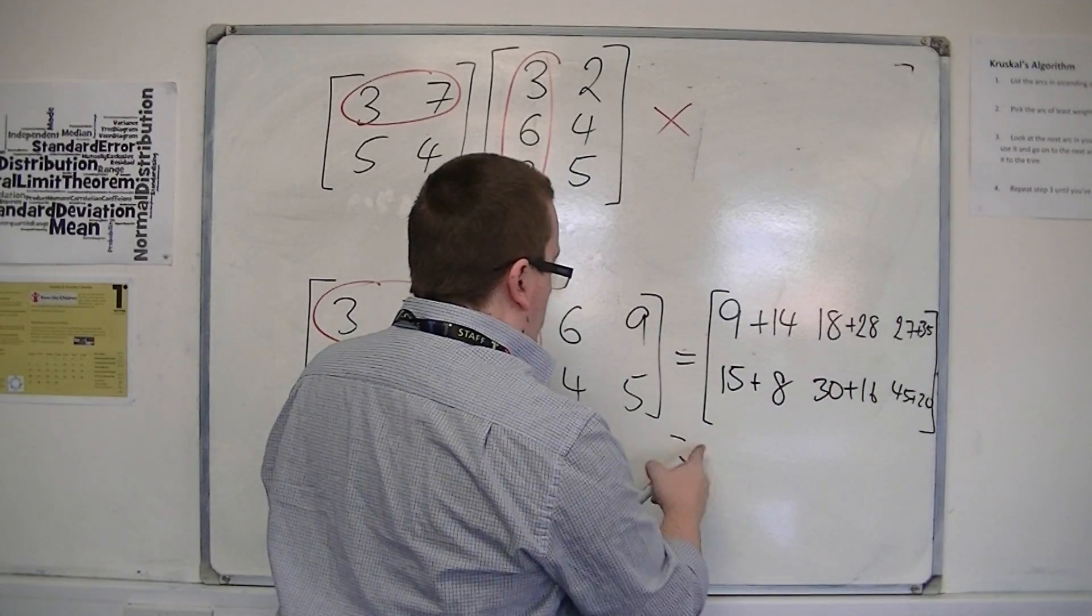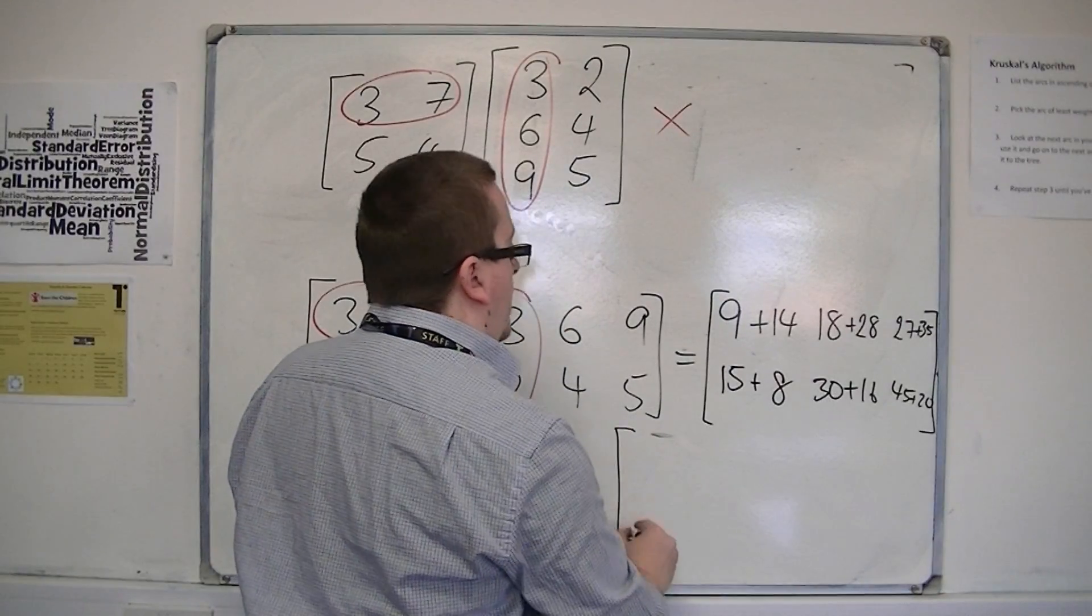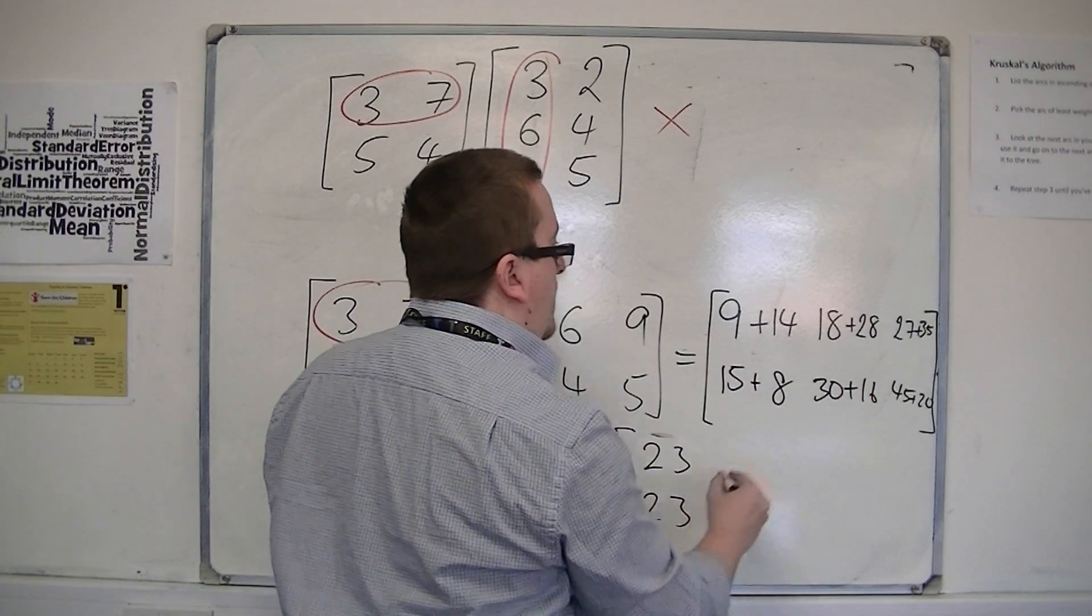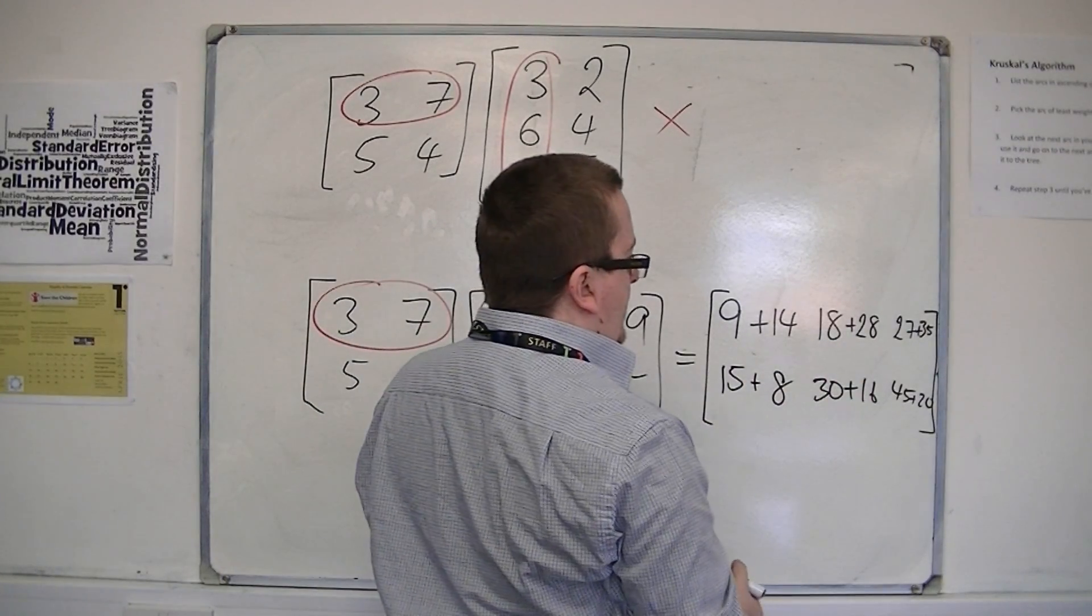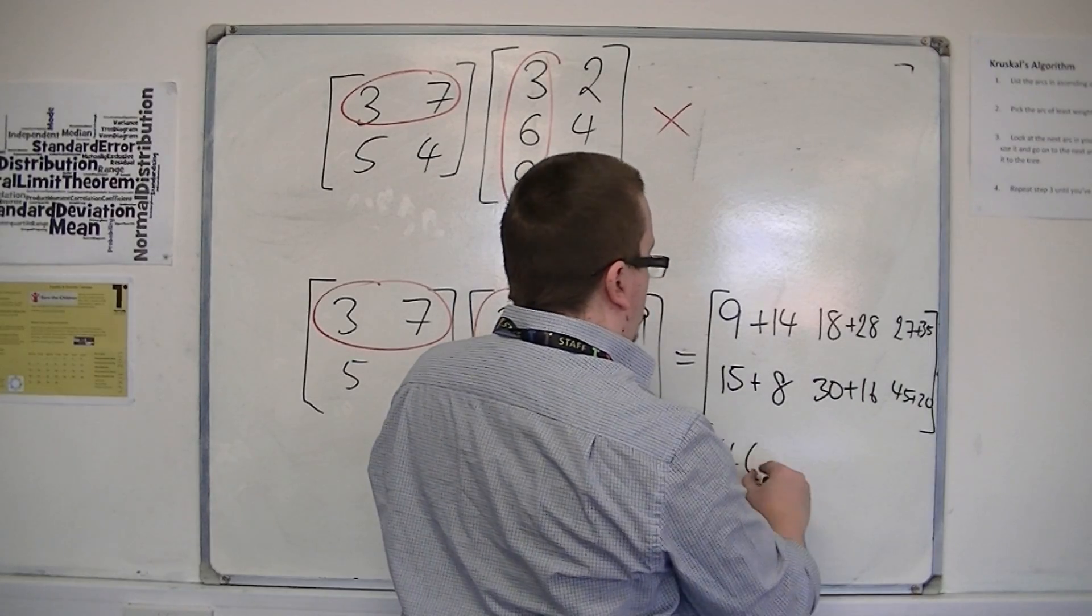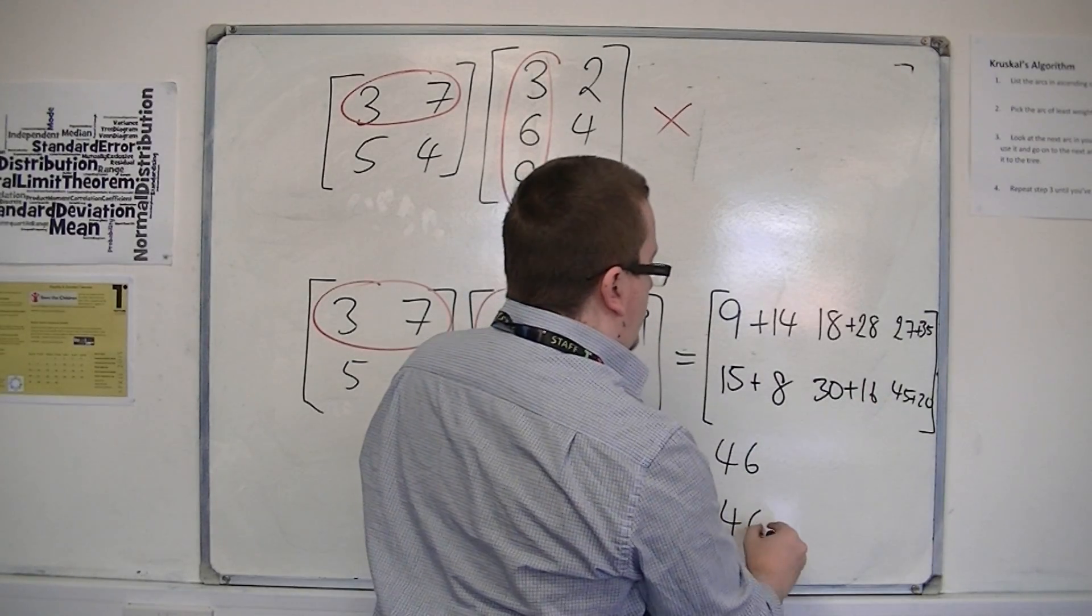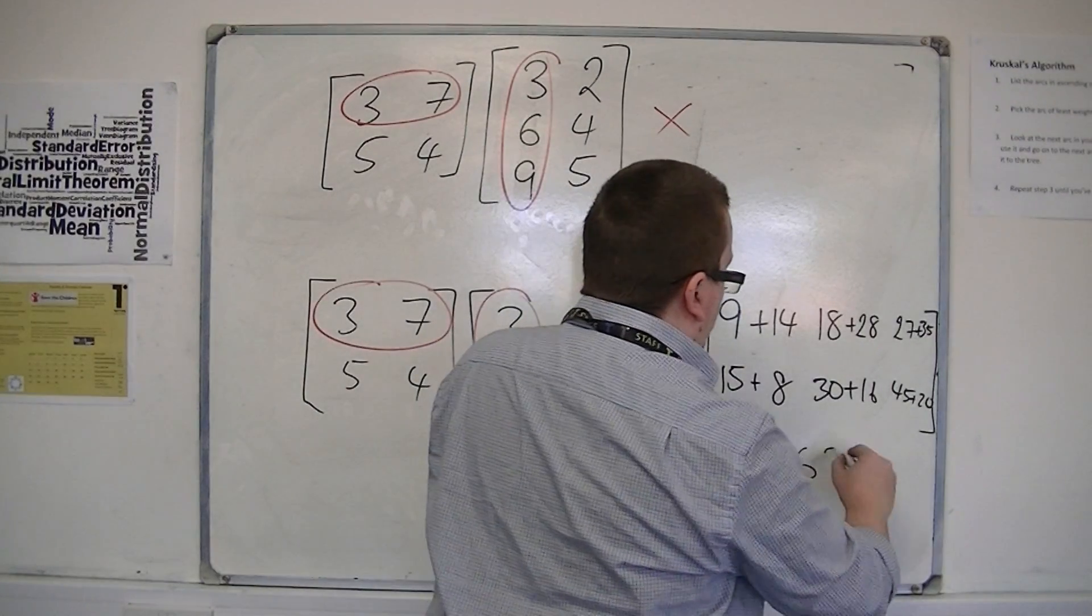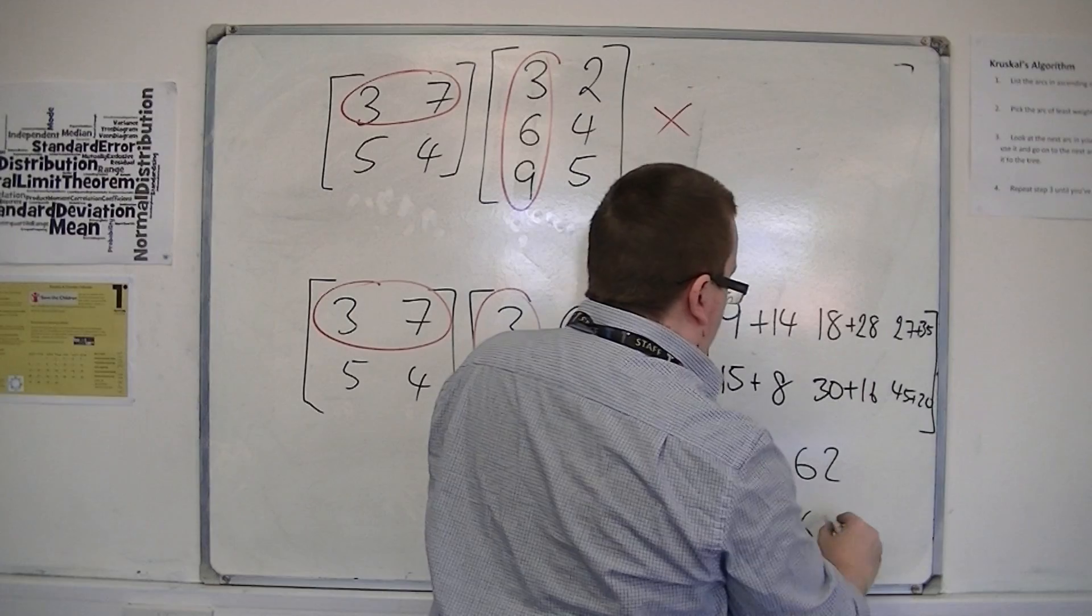So, in the end, we have 9 plus 14 is 23, 15 plus 8 is 23, 18 plus 28 is 46, 30 plus 16 is 46, 27 plus 35 is 62, 45 plus 20 is 65.